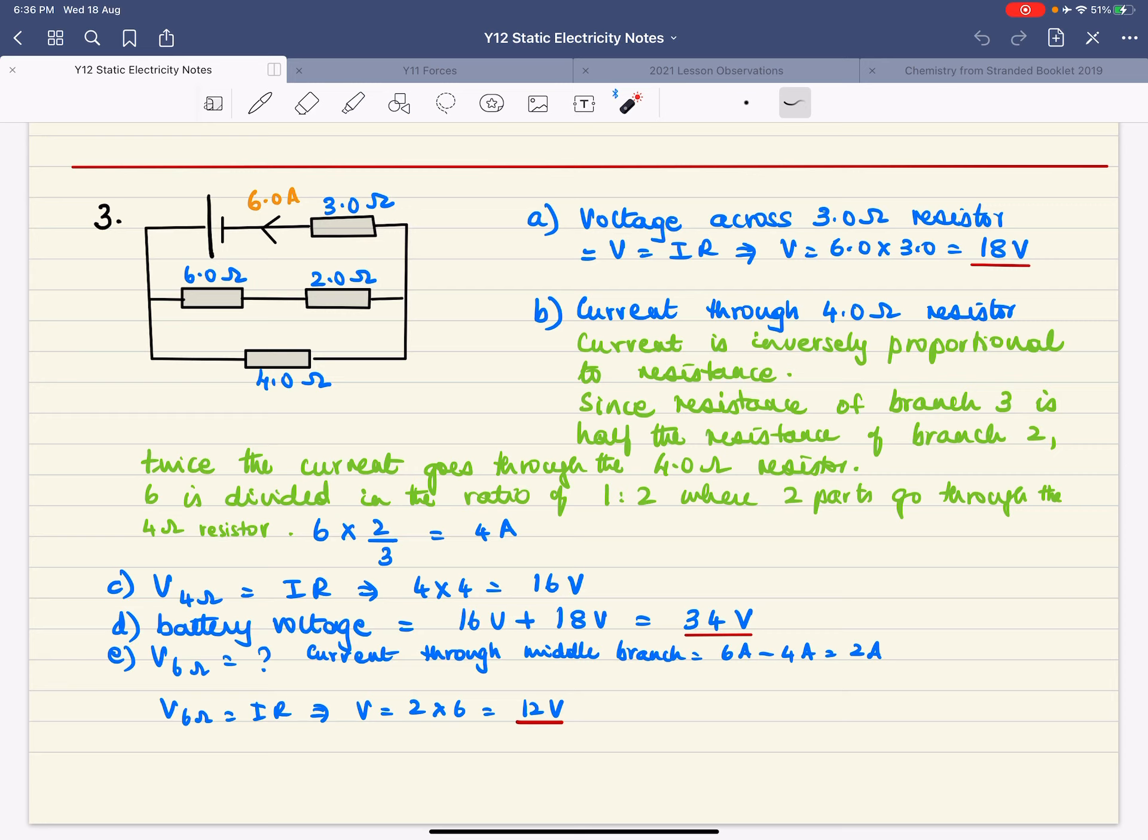Then it says what is the battery voltage? Now the voltage of the battery minus the voltage across the 3 ohm resistor will give me the voltage for each branch. So the voltage of the battery minus 18 volts equals 16. So VB minus 18 equals 16.